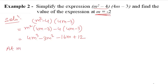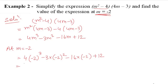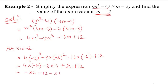Now substituting m = -2: 4(-2)³ - 3(-2)² - 16(-2) + 12. Since the power 3 is odd, (-2)³ = -8; power 2 is even, (-2)² = +4. So: 4×(-8) = -32, -3×4 = -12, -16×(-2) = +32, plus 12. Result: -32 - 12 + 32 + 12 = 0.